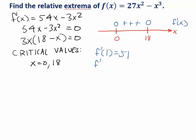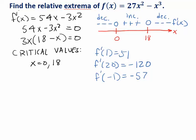Let's check something greater than 18. Let's try 20. You can verify that if you plug a 20 into 54x minus 3x squared, you get a negative number. And let's plug in something less than 0. Let's try negative 1. And again, you can verify that you get a negative number out. And that tells us that our original function is decreasing on the interval of x values less than 0, increasing on the interval of x values between 0 and 18, and decreasing again on the interval of x values greater than 18.